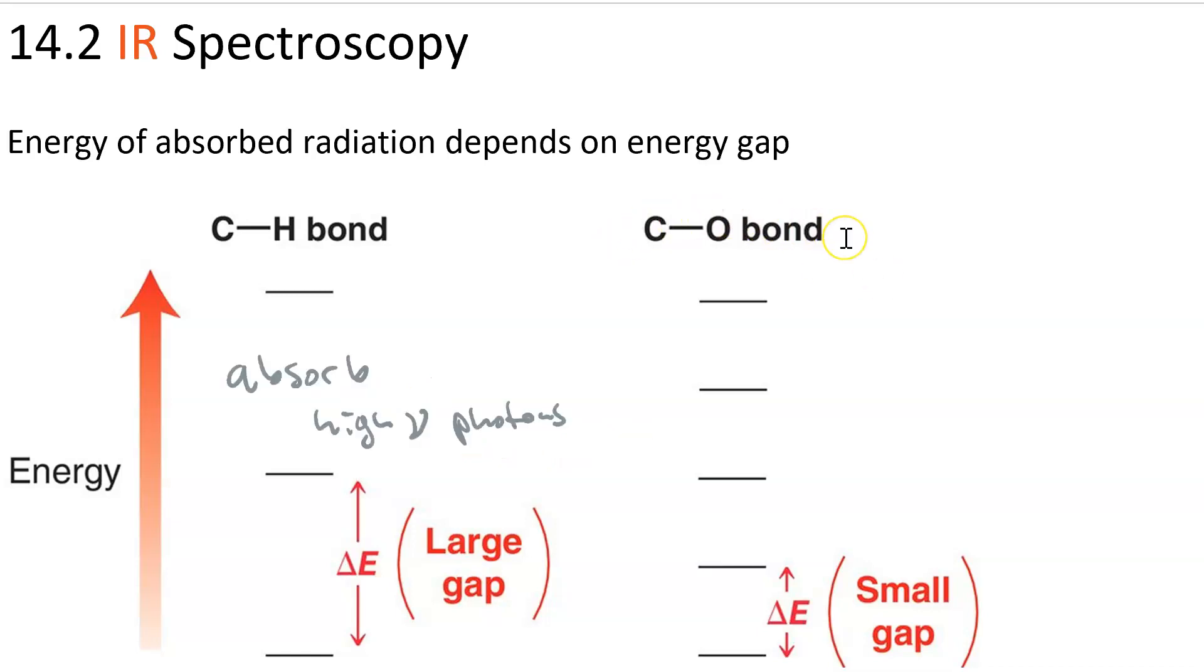For a CO bond, on the other hand, the energy gap between vibrational levels is small, so a CO bond will absorb lower frequency photons.